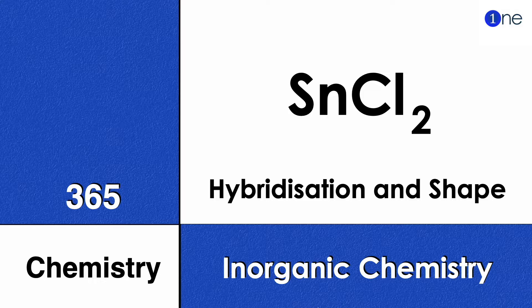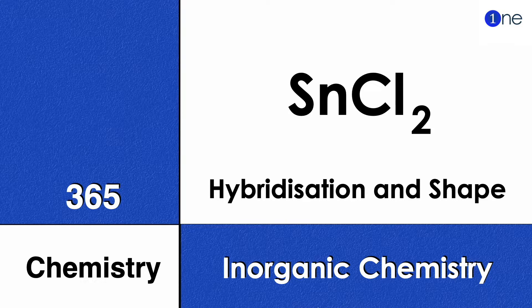Welcome to One Chemistry. This is the 365 Chemistry Series — inorganic chemistry questions. Here you have tin dichloride, and you need to find the hybridization and shape of the compound.